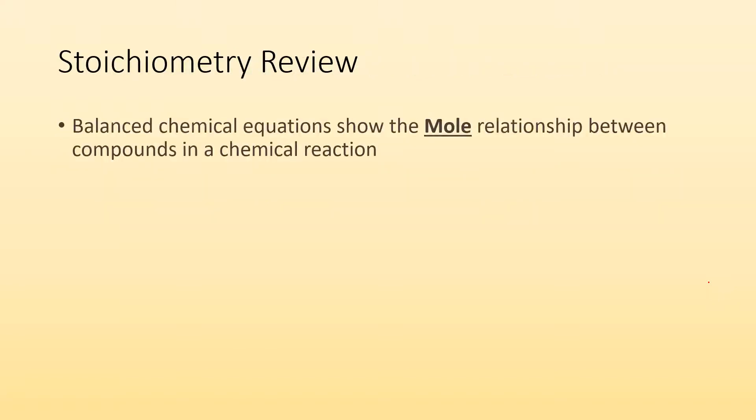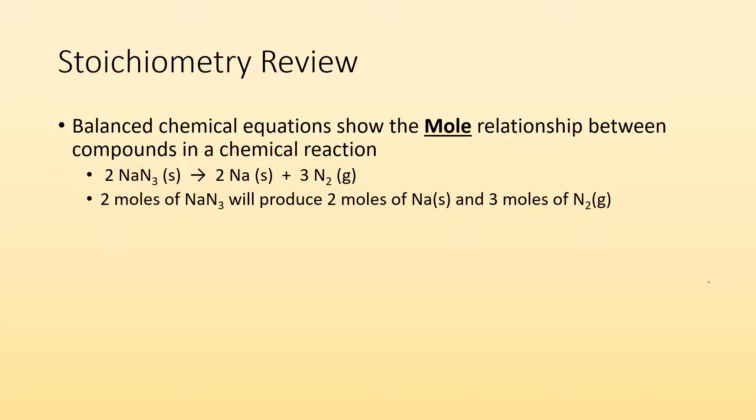So a little review of stoichiometry. The balanced chemical equation shows the mole relationship between compounds in a chemical reaction. So if I had this balanced chemical equation, 2 NaN3, the 2 is representing the moles. So if I use two moles of NaN3, I can make two moles of sodium solid, as well as three moles of nitrogen gas. It's not grams. It's moles. So whenever we're doing a comparison between two things, we have to get moles.